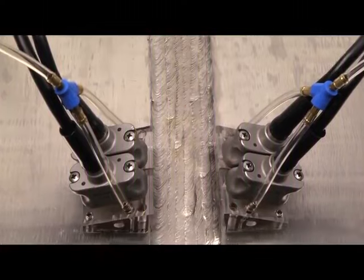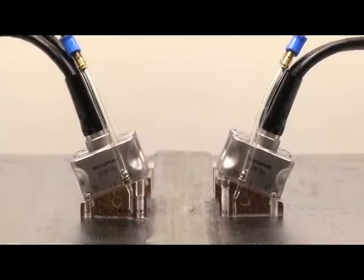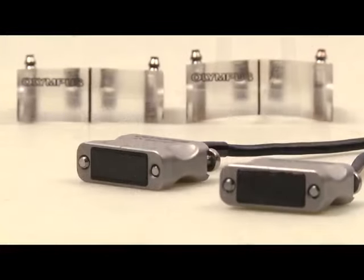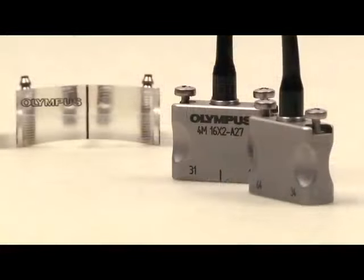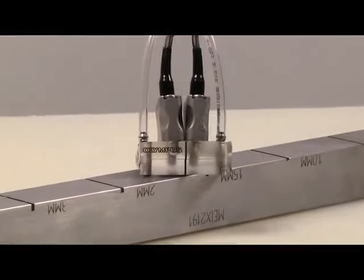Olympus Dual Matrix Array Probes extend the inspection range of the OmniScan and Focus instruments for coarse-grained austenitic stainless steels and Inconel alloy materials and welds. The Dual Matrix Array or DMA probes improve flaw detection.